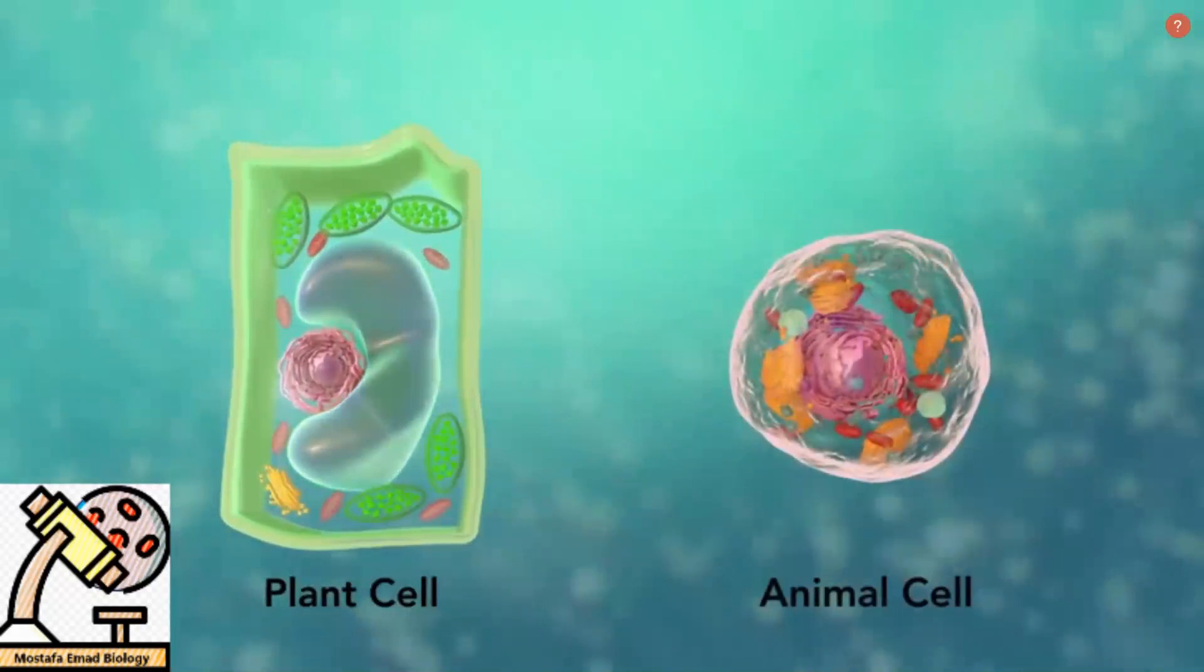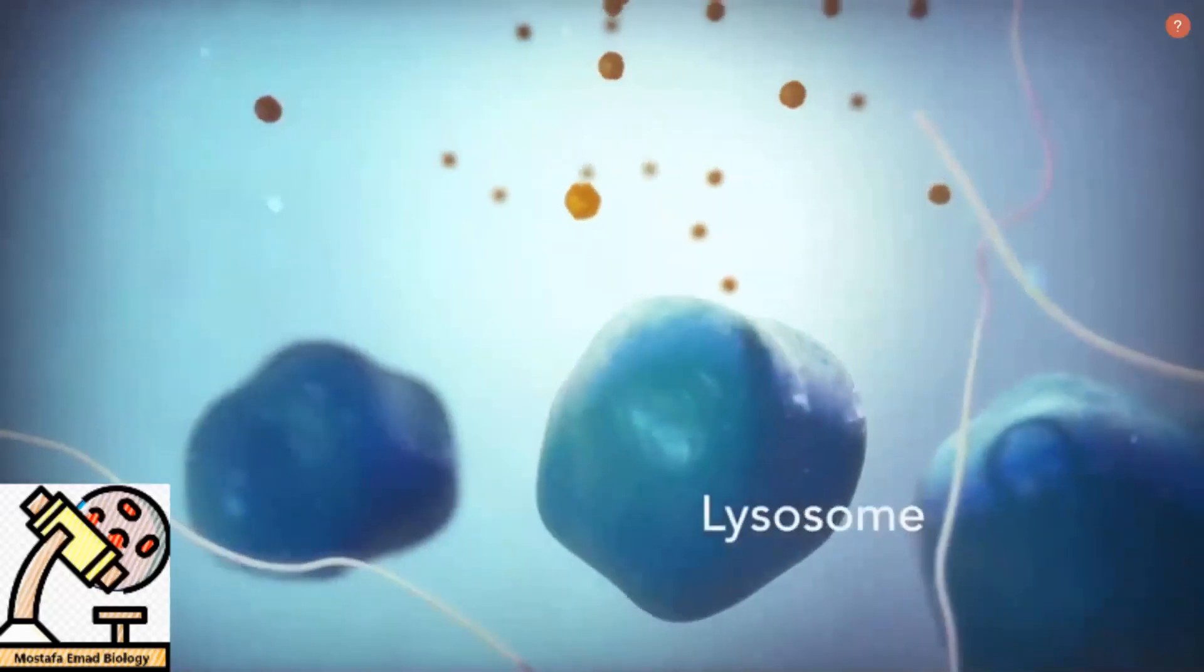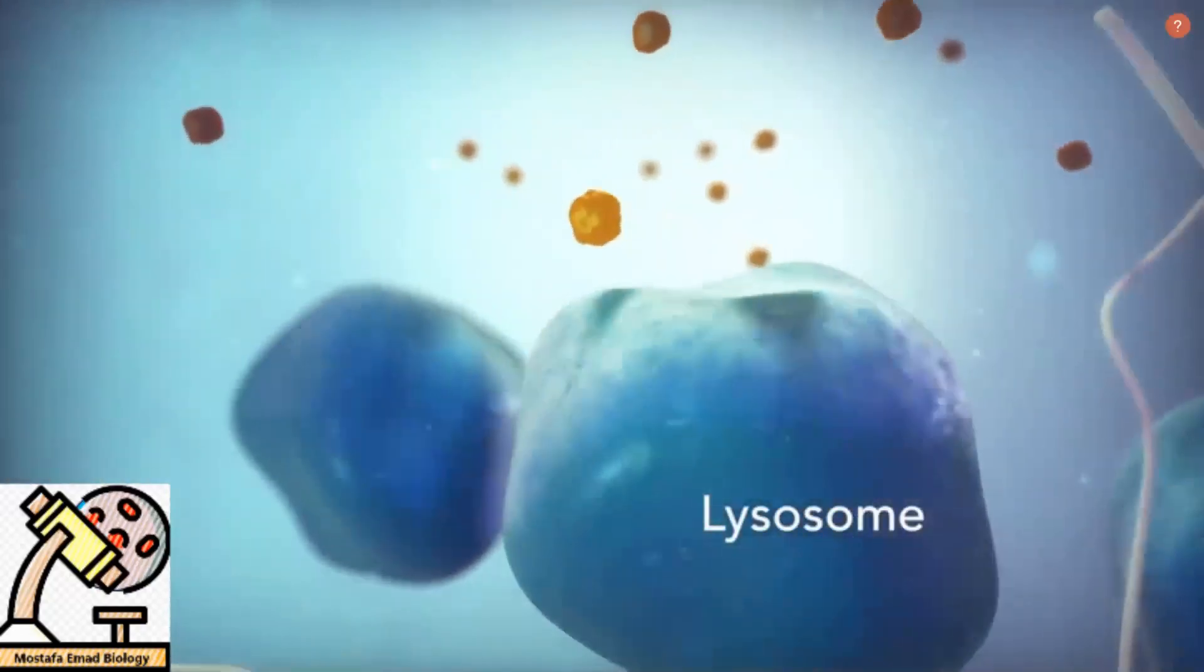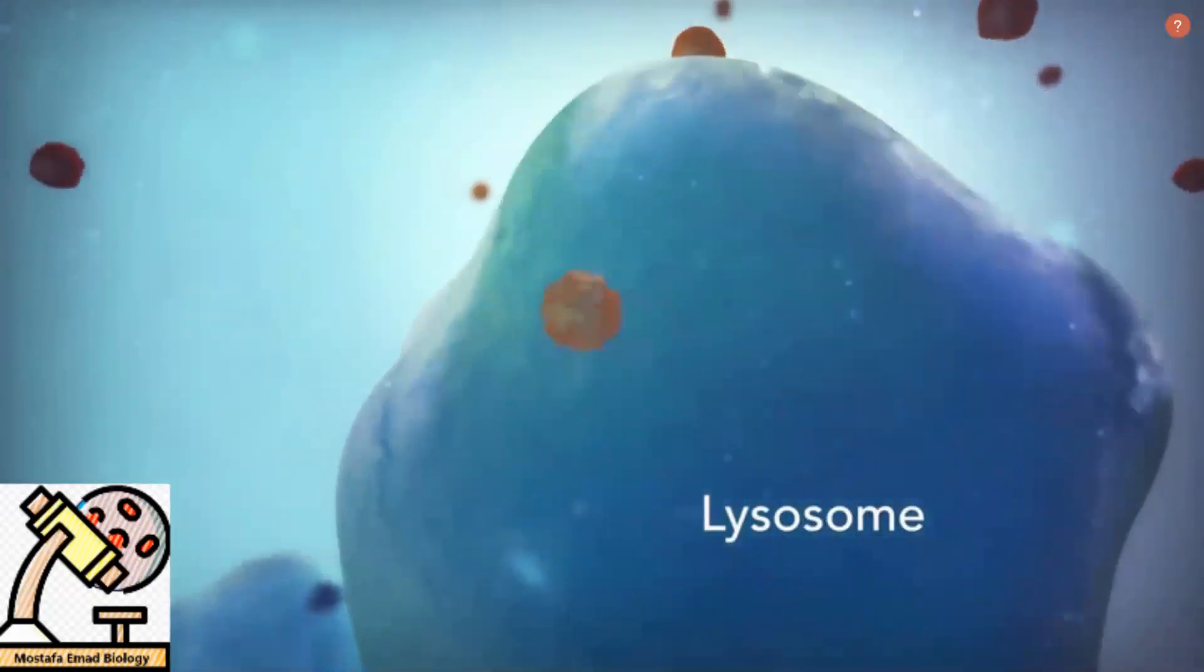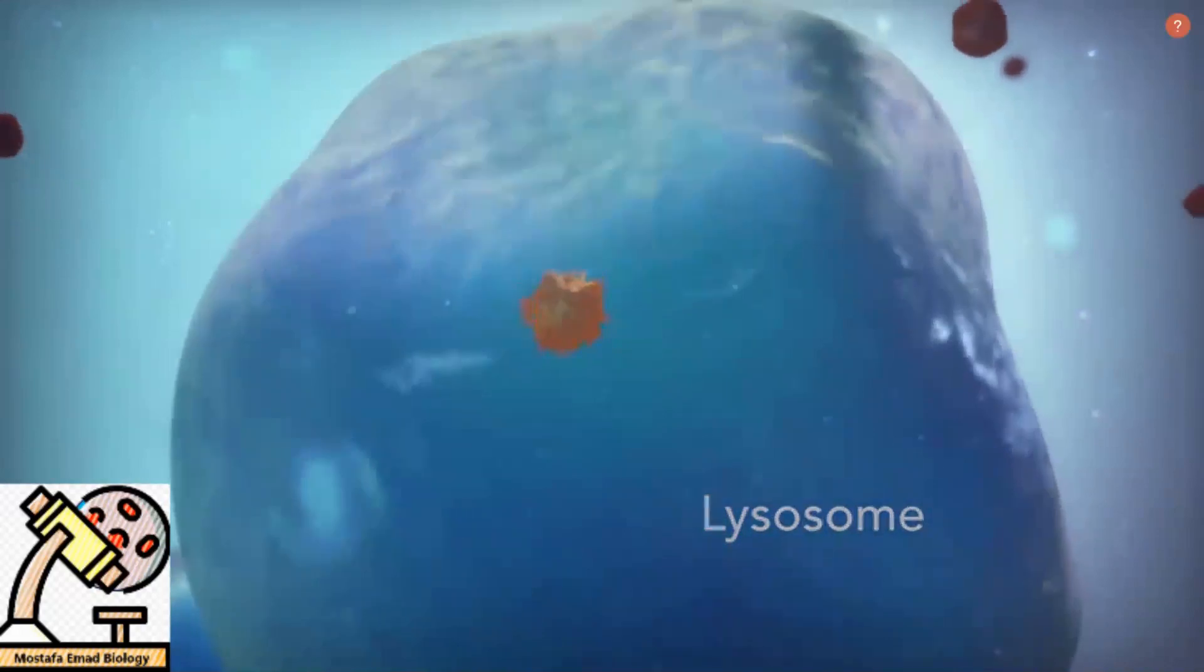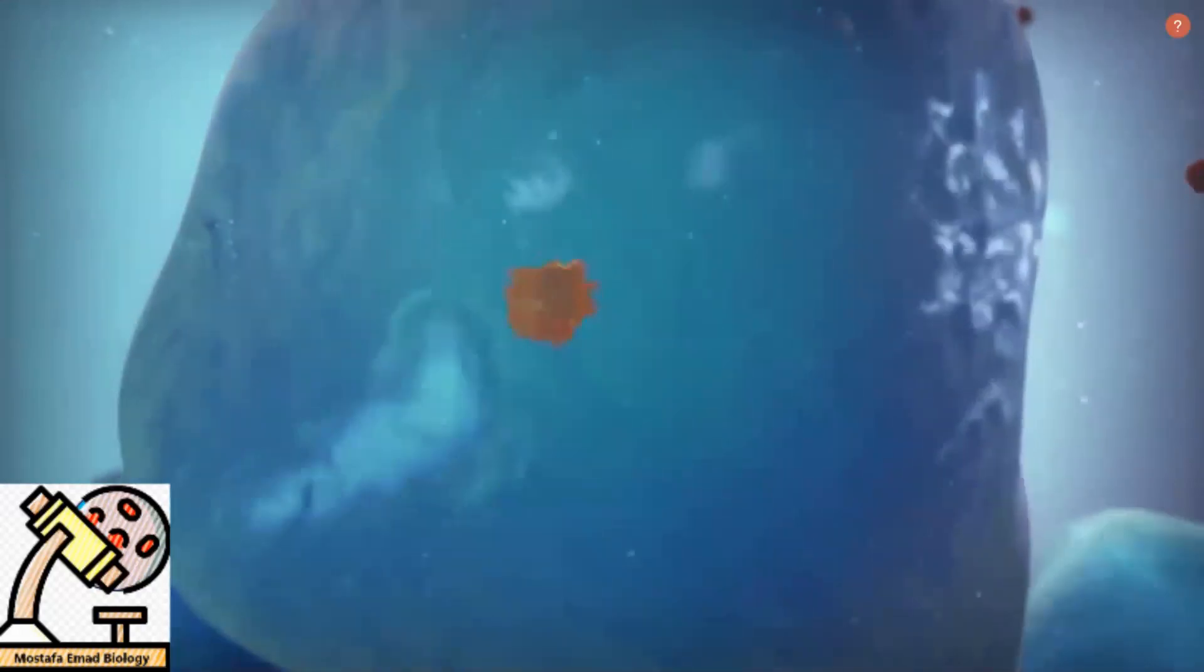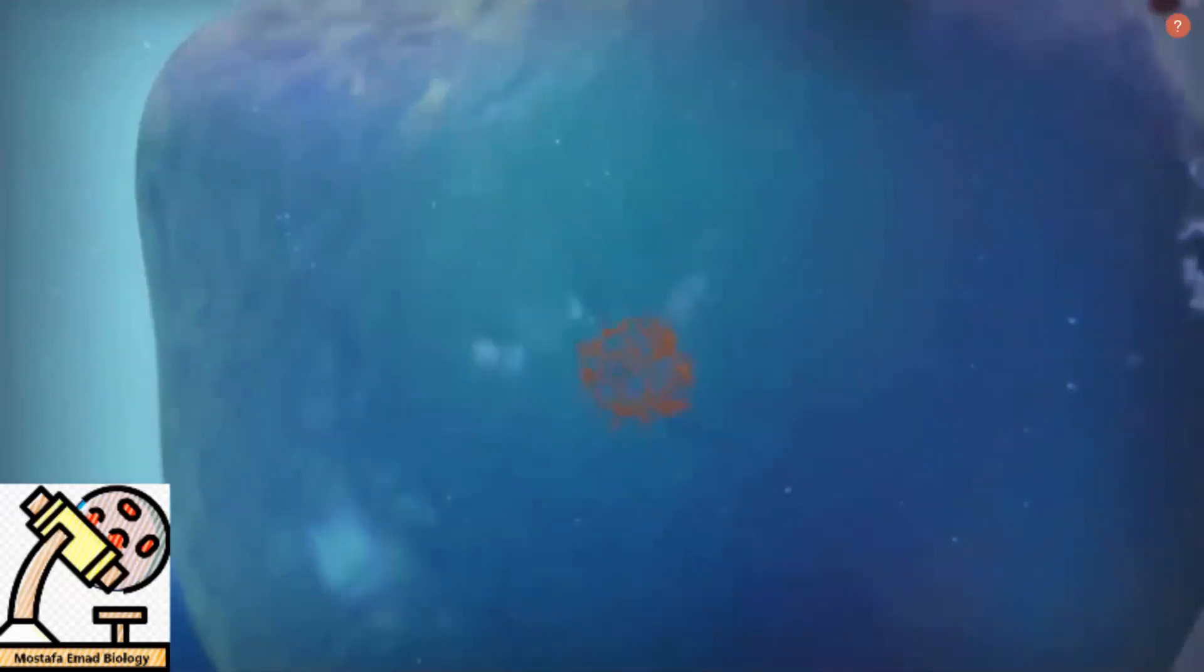Going back to the animal cell, you'll see an organelle called a lysosome. Lysosomes are the garbage collectors that take in damaged or worn-out cell parts. They are filled with enzymes that break down the cellular debris.